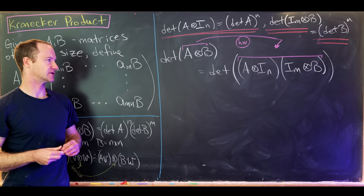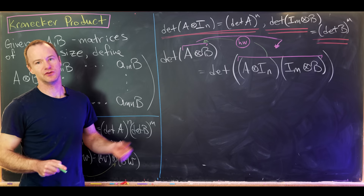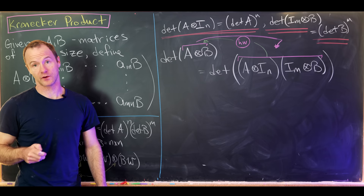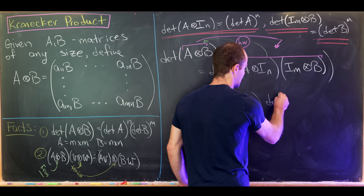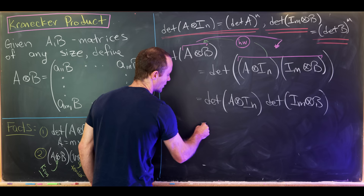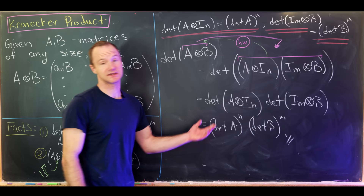Since the determinant factors over ordinary matrix products, we get det(A⊗B) = det(A⊗I_n) · det(I_m⊗B). Applying our two identities, this equals det(A)^n · det(B)^m, which is exactly what we wanted to show.